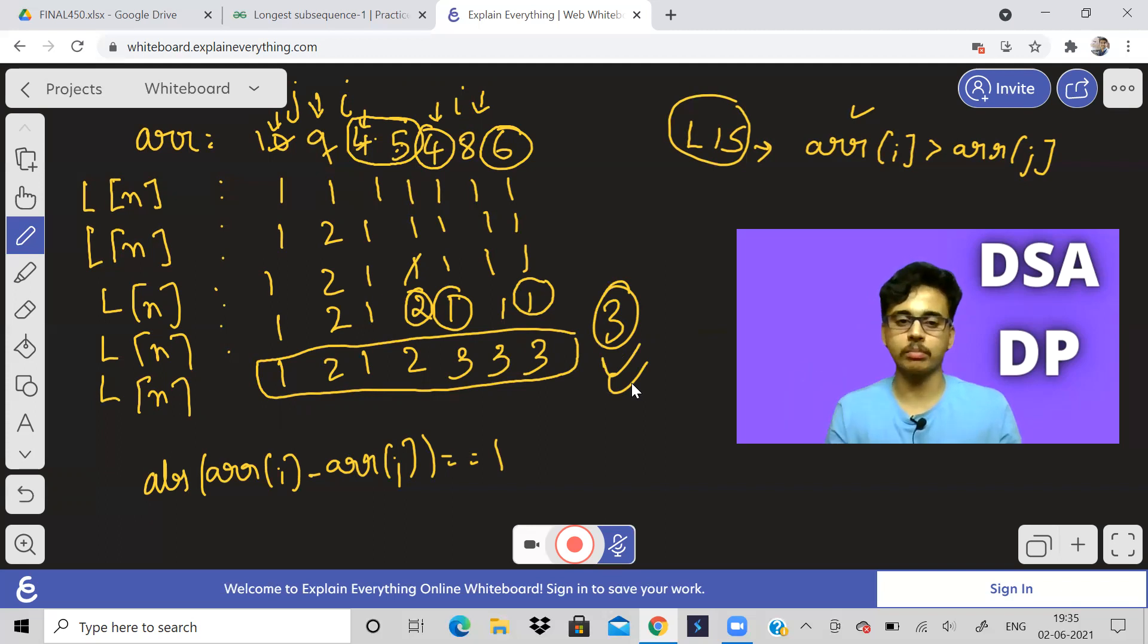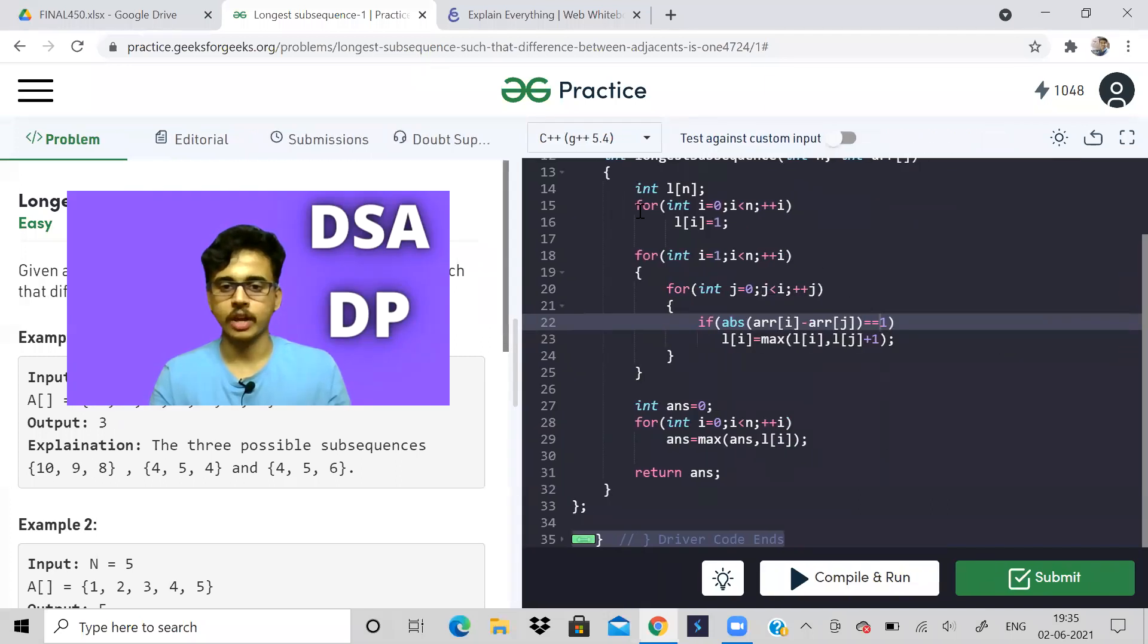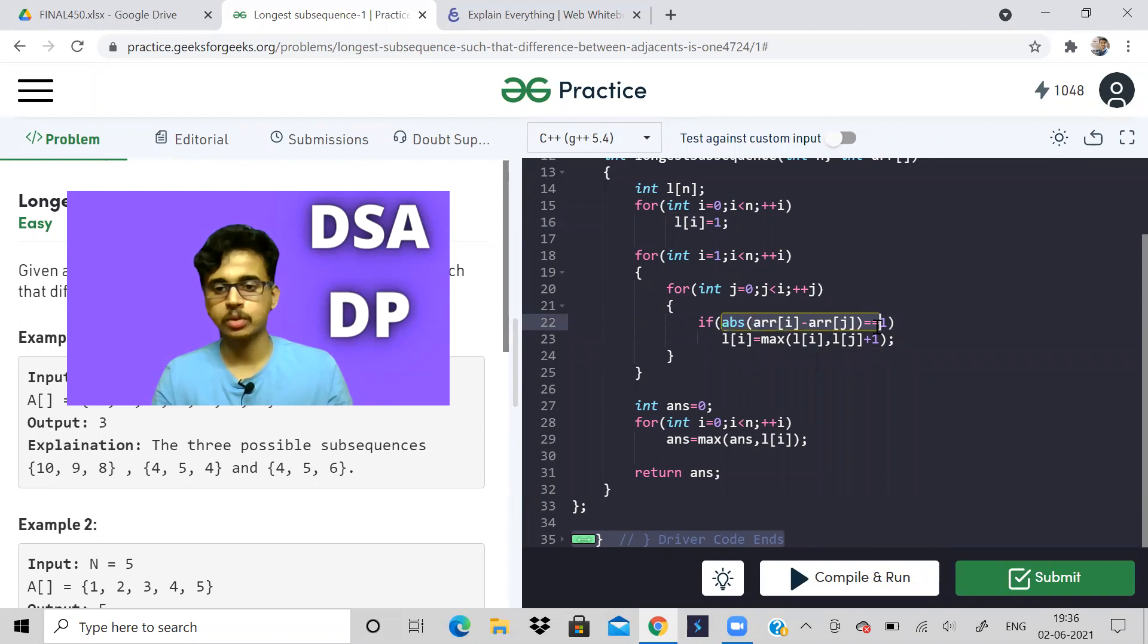Only difference is this condition. This condition over here, not this one, but this is the parent kind of problem. So let us quickly go through the code. It is the same, nothing so different. So I've just made an array L of N and initially L of I, every element is one. It means minimum possible answer will be one. Then same thing, the nested for loop, I from one to N minus one, J from zero to I minus one. Now, this condition is absolute of A of I minus A of J. If it is equal to one, then you check for this. And finally, find a maximum of all the elements in the L array. The maximum value will be our answer.